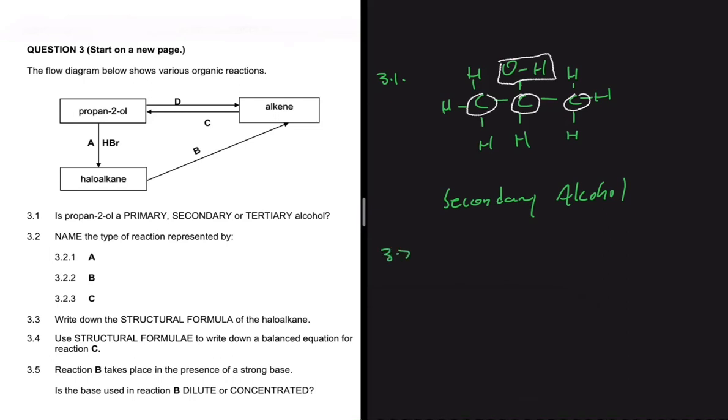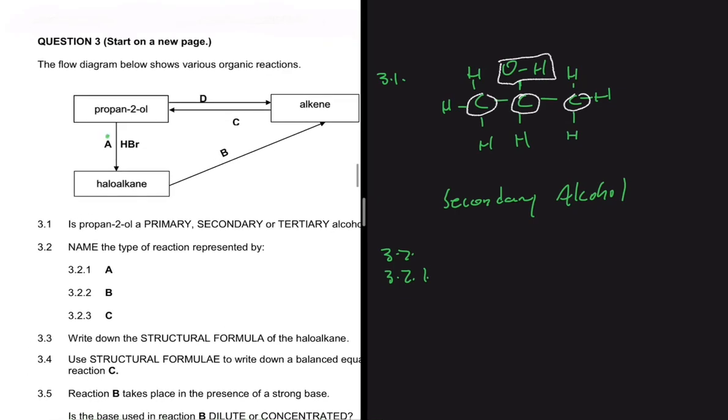Now let's do 3.2, 3.2.1. Name the type of reaction represented by A. So let's go ahead and look at A. We have reaction A here. We have an alcohol, and then it turns into a haloalkane. So what is happening here?